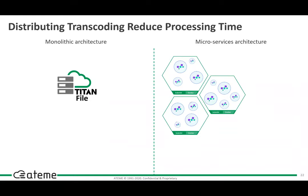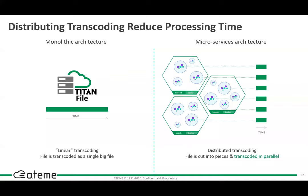Another concrete gain from the transition to microservices is the distributed transcoding feature of our file encoder. Thanks to the scalability benefits of microservices, our VOD application now has the ability to transcode a single file across several machines. The input is split into segments, each segment transcoded in parallel on different pods, and once all segments have been processed, they are stitched back together. Using this feature and based on the resources available in your cluster, you're able to drastically cut down the processing time of a single file. In some cases, this feature also enables you to fully utilize the resources you have available, making you able to saturate your system.